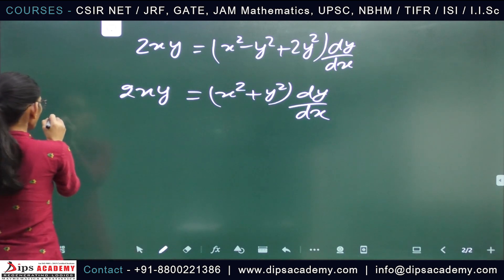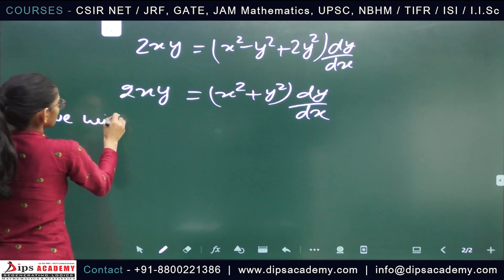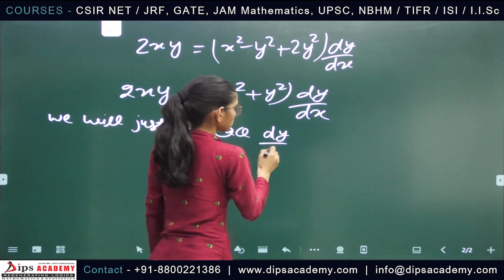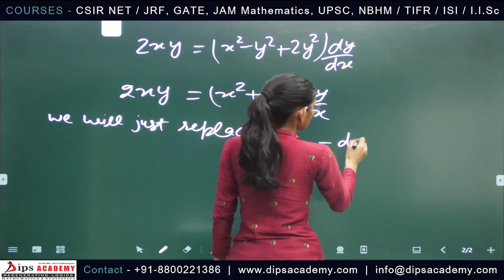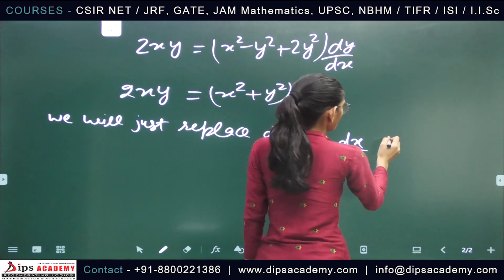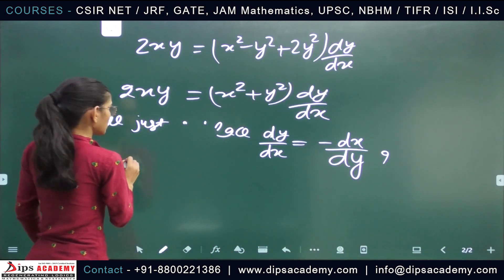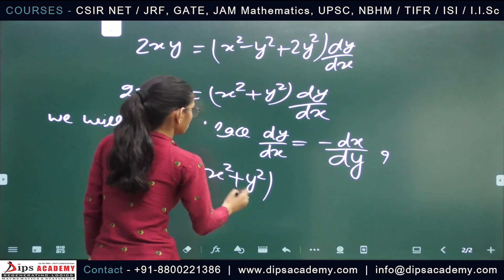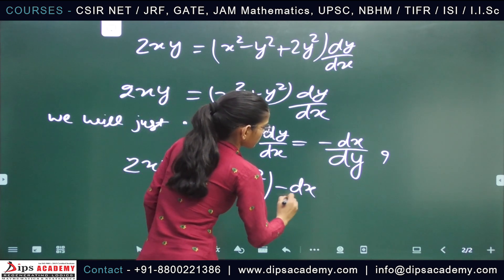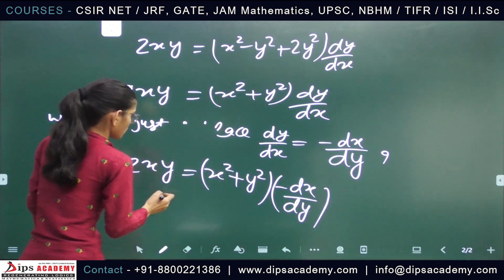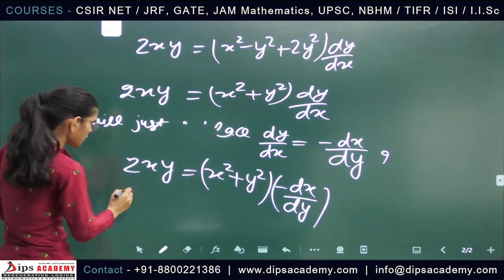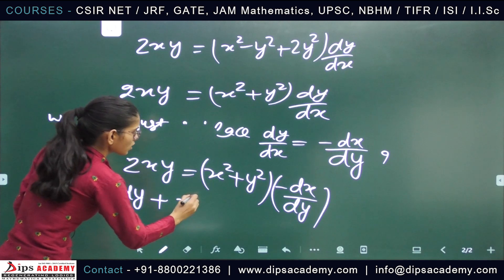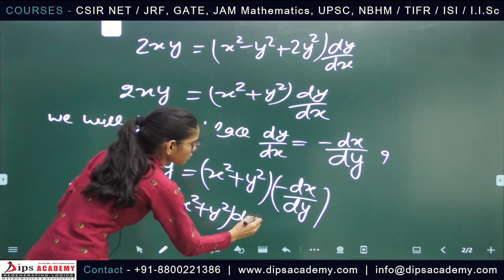Now we replace dy/dx with minus dx/dy, because orthogonal curves have slopes that are negative reciprocals of each other. Making this substitution, our equation becomes 2xy equals negative (x squared plus y squared) times dx/dy. Rearranging, we get the equation: (x squared plus y squared) dx plus 2xy dy equals 0.